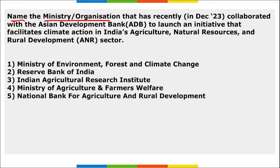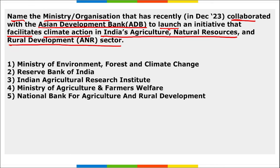Next: name the ministry or organization that has recently collaborated with the Asian Development Bank to launch an initiative facilitating climate action in India's agriculture, natural resources, and rural development sector. It is NABARD (National Bank for Agriculture and Rural Development). Under this initiative, NABARD collaborated with the Bill and Melinda Gates Foundation to establish a technical support unit addressing climate change in India.